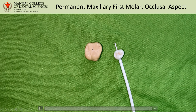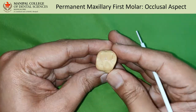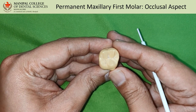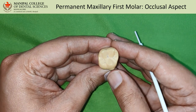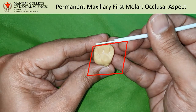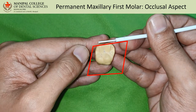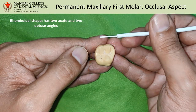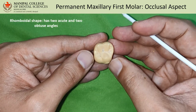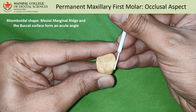In this video we will be describing the occlusal aspect of the permanent maxillary first molar. When you look at it from the occlusal aspect, it is roughly rhomboidal in shape. The rhomboidal shape is mainly because of the two acute and two obtuse angles that the outlines form.